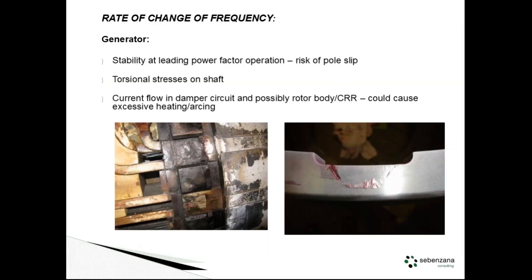Moving on to the rate of change of frequency. One of the issues is if the system frequency changes too fast, the generator can't keep up — the ability of the generator to maintain synchronicity can't keep up. You've heard of pole slipping: not good, potential tripping out of the generator itself or the auxiliaries, and you lose a big machine and then have problems getting back onto the grid. What we're probably more concerned with for long-term damage is proportional stress on the shaft — as you're trying to ramp up and down the frequency, increasing and decreasing speed, you're effectively twisting the shaft.